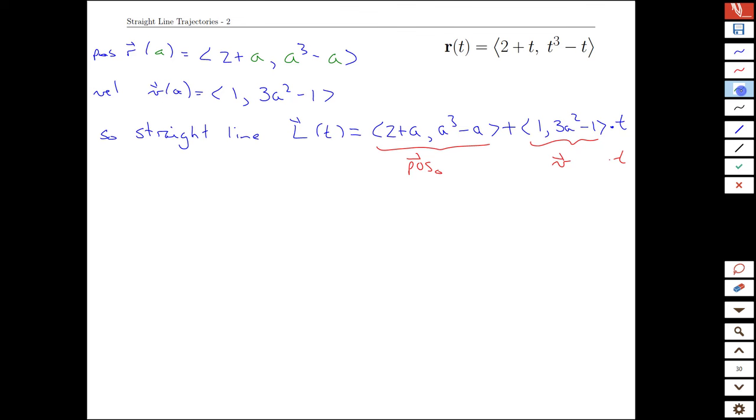So this is our initial position as a vector, and this is our velocity as a vector times t. And then we want that to go through the point (5, -3). So we simply sub that in. And then we get a set of equations that we can start solving for both a and t.